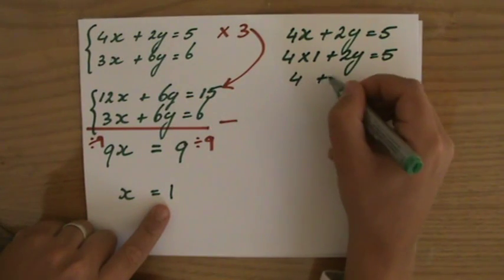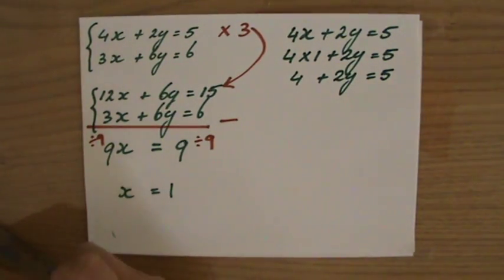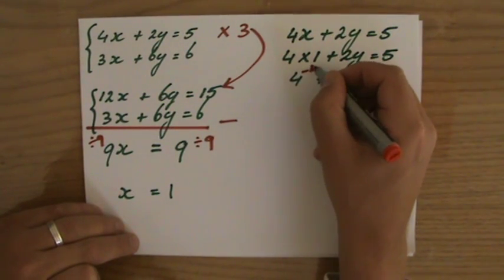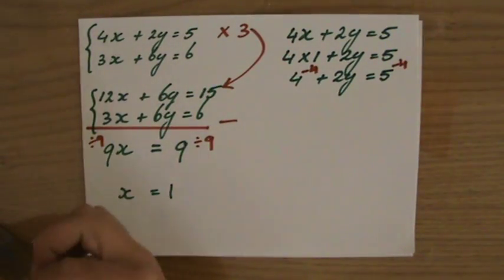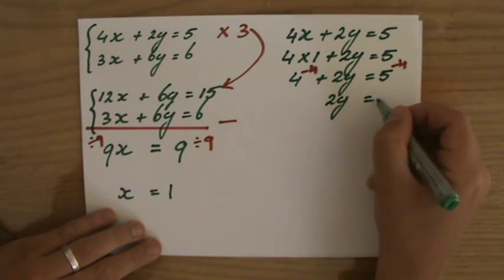So it's 4 times 1 plus 2y equals 5. So that is 4 plus 2y equals 5. So I'm rearranging the formula. This positive 4 really needs to get out of there. But that's only equal if I do the same on the other side. So if I take away the 4 here, got to take it away there. 2y equals 1.